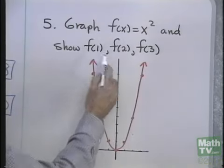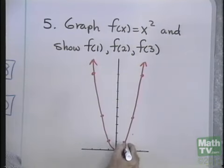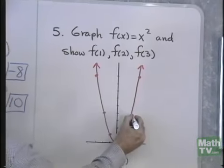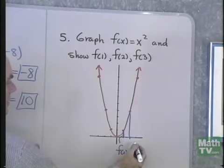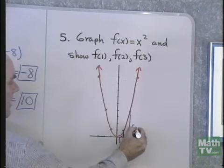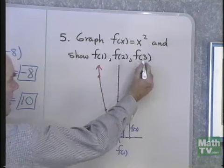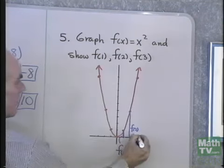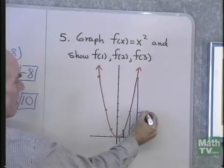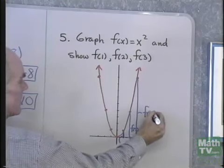Now, f(1), if I go out to 1 on the x-axis, f(1) is the distance up to the graph from that point. So this is f(1). If I go to 2 on the x-axis, f(2) is this distance up to the graph from x equal 2 on the x-axis. So that's f(2). If I want f(3), I go out to x equal 3, and then up to the graph. This vertical line right here has a length that's equal to f(3).